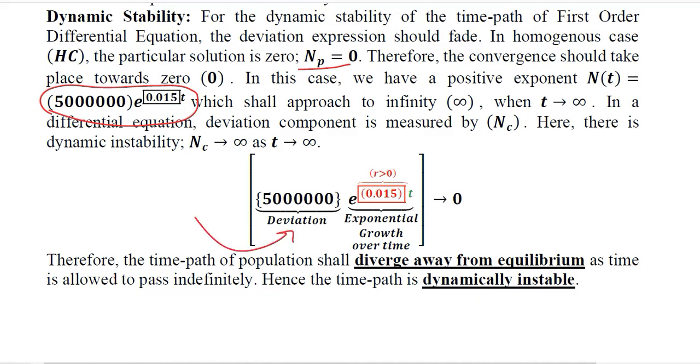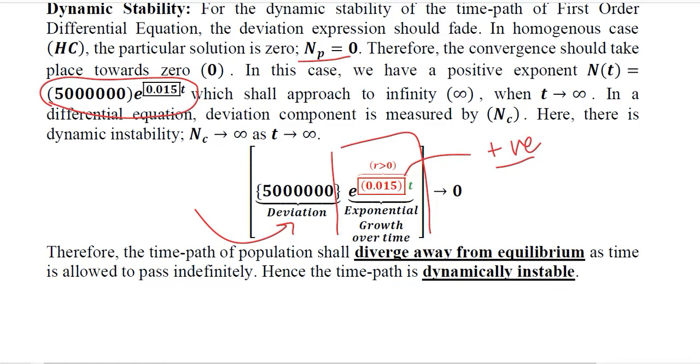This part is the deviation from the equilibrium, and this is the exponential growth over time. Now r is greater than 0 in this case because this value is a positive value. When we have an exponent which is a positive value, we are dealing with a growth case, exponential growth, and the overall value of deviation will increase.